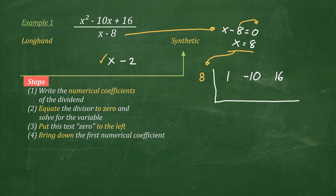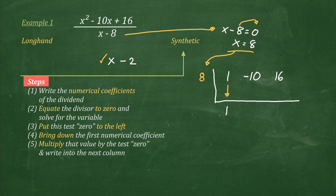Step 4: bring down the first numerical coefficient — you bring down 1. Step 5: multiply this value by the test zero and write into the next column. So in this case, 1 times 8 is equal to 8. We got this by multiplying 1 times our test value, test zero, 8. 1 times 8 is equal to 8.